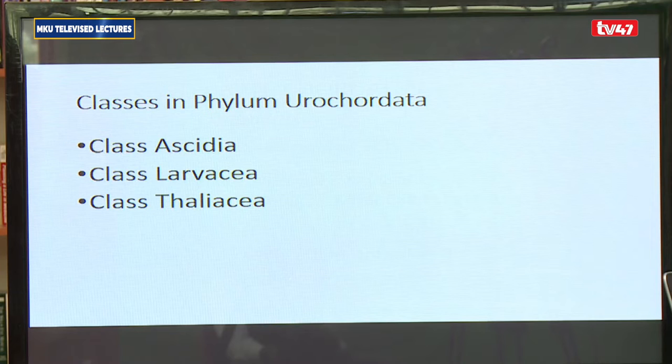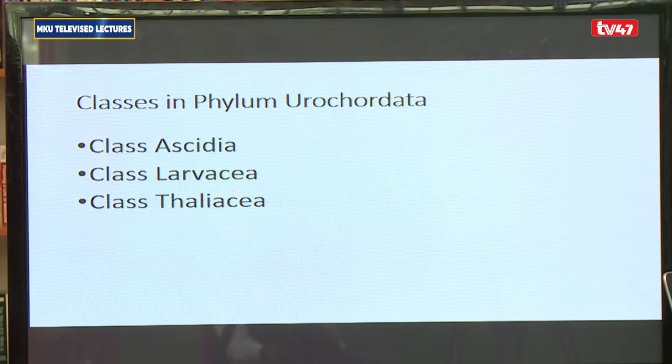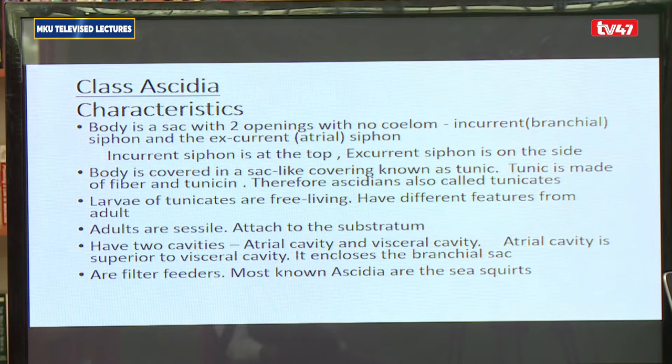In the subphylum urochordata, we tend to find it has got three classes. The classes in subphylum urochordata are: the class Ascidiacea, and the organisms in it are called ascidians; we have the class Larvacaea, and the organisms in it are referred to as larvaceans. We begin by looking at the class Ascidiacea and its distinguishing features or characteristics.